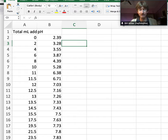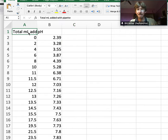Before I do my next two trials, I want to graph each set of data in Excel. I've got total milliliters added here in this column on the left, and pH on the right.